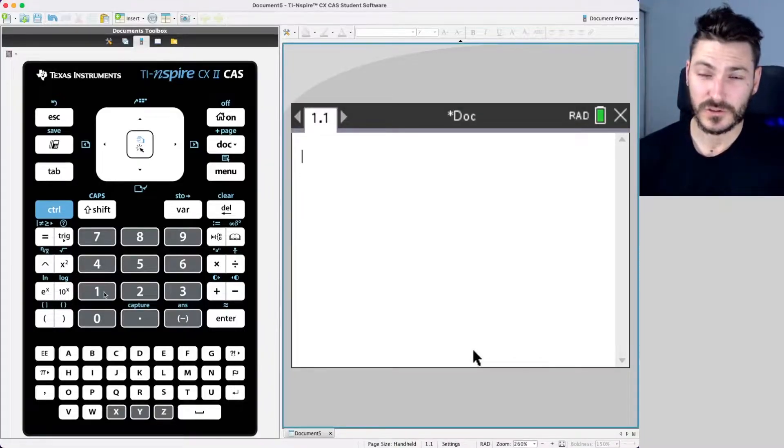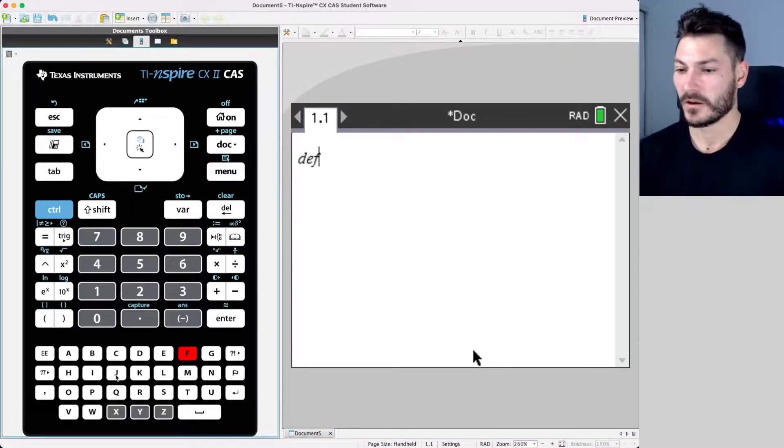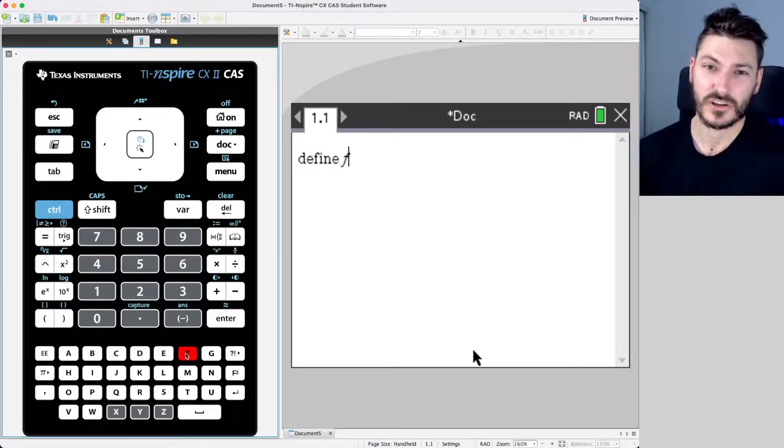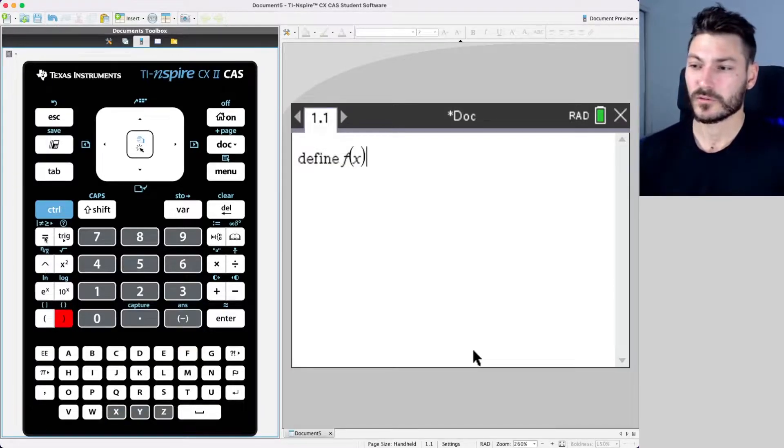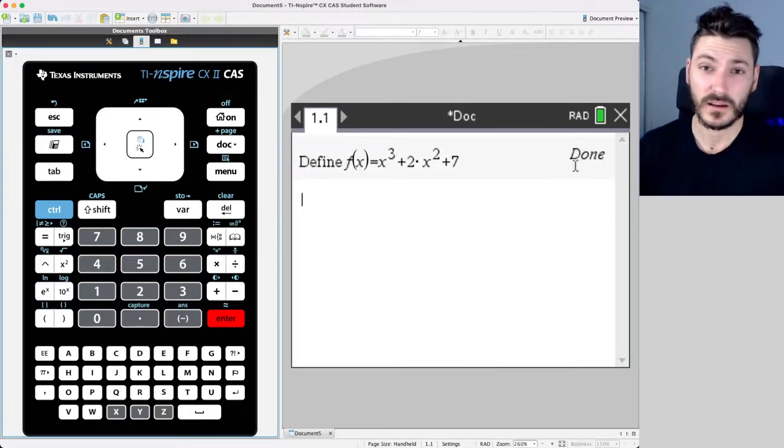So to define a function, all you have to type is define space and then the function. So D-E-F-I-N-E and then spacebar and define your function. I'm going to use f(x) because it's a very common way to define a function and we'll define this function as a cubic. For example, x to the power of 3, and we'll do a simple one. We'll go plus 2x squared, so we have multiple x variables, and we'll go plus 7. Okay, and when you hit enter it'll give you a little done statement there telling you that it has now been defined.